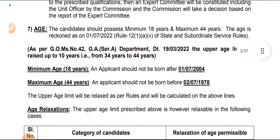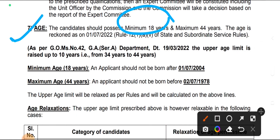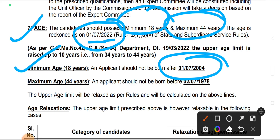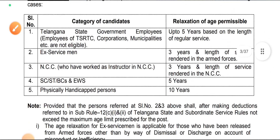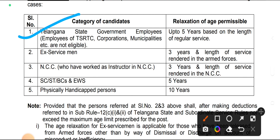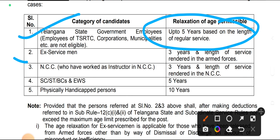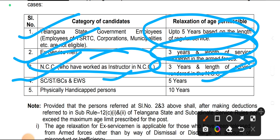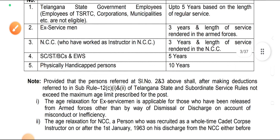Minimum age is 18 years and maximum age is 44 years, calculated on the basis of 1-7-2022. You should not be born after 1-7-2004 and not before 2-7-1978. Age relaxation: Telangana state government employees get 5 years, ex-servicemen 3 years, NCC candidates 3 years, SC/ST and EWS candidates 5 years, and physically handicapped persons 10 years age relaxation.